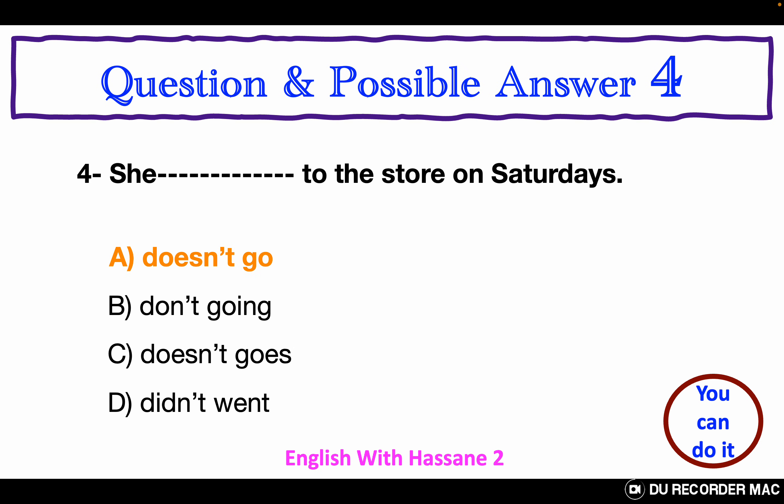Question and possible answer 4. All the questions of this grammar test are in the present simple negative. Choose the best answer A, B, C, or D. She ___ to the store on Saturdays. A. Doesn't go. B. Don't going. C. Doesn't goes. D. Didn't went. The correct answer for this question is the letter A. Doesn't go.